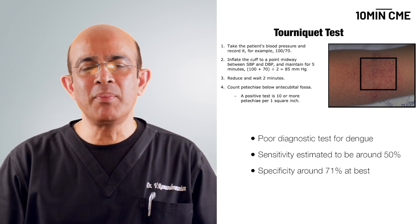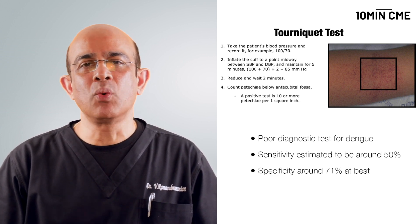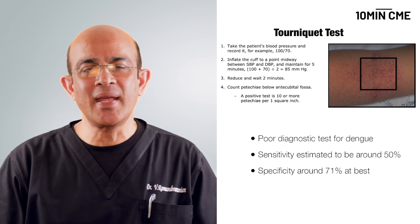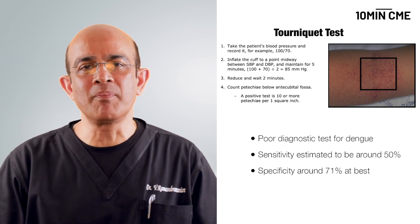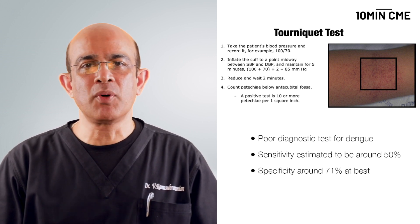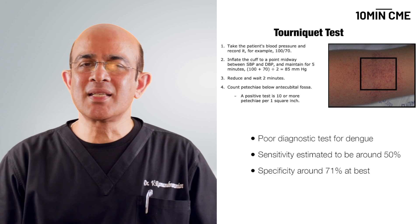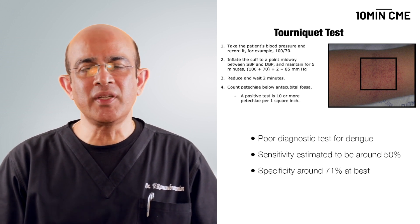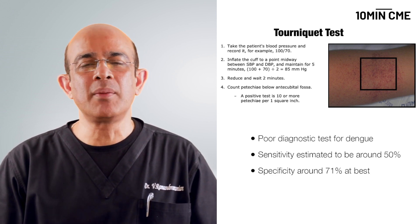The number of hemorrhagic spots occurring in a one-inch square area, typically in the forearm after one minute of tourniquet application, is used to consider the possibility of dengue. But studies have shown that the sensitivity of the tourniquet test is 58 percent and the specificity at best 71 percent. Even increasing the area to two inches does not make a difference in diagnostic accuracy.